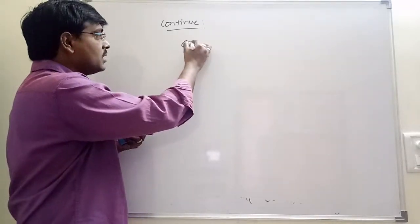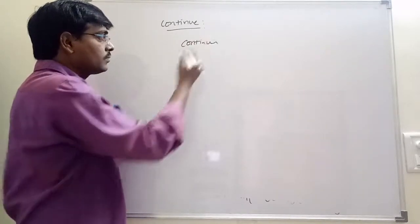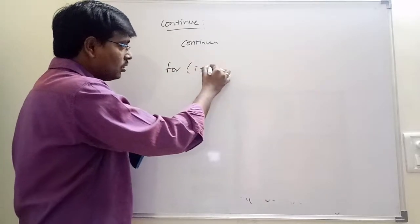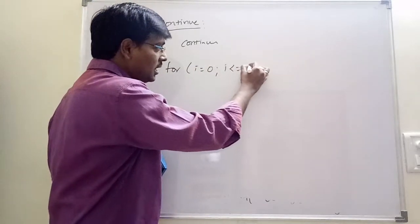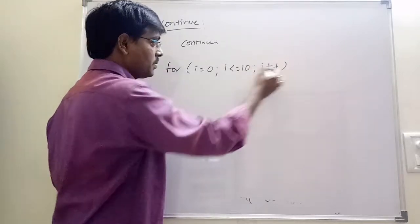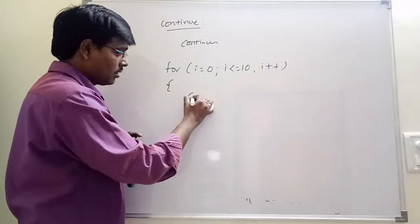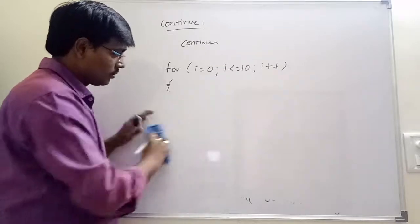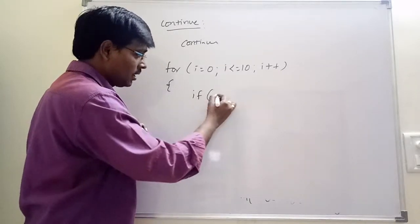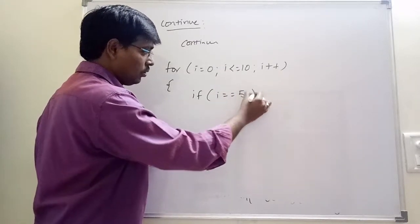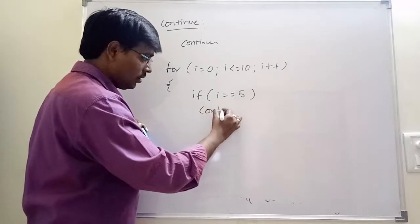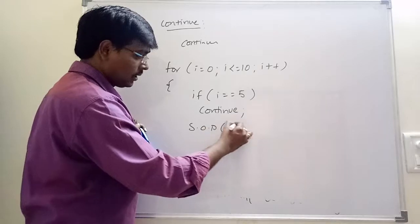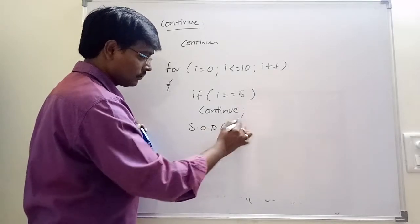The syntax is: for i = 0, i less than or equal to 10, i plus plus — if i equals equals 5, continue. Then System.out.println of i.